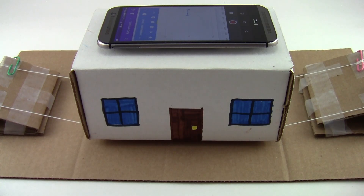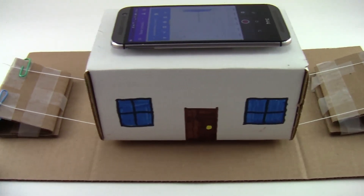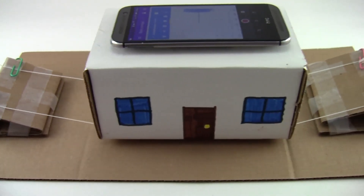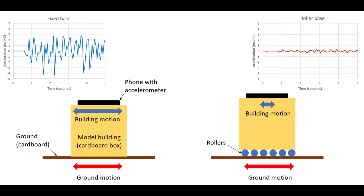You can even get rid of the rollers entirely and try suspending the house using straws and string. Your students can use a combination of these methods or completely different ideas that they come up with on their own to try and reduce the peak accelerations felt by the building during a shake test.